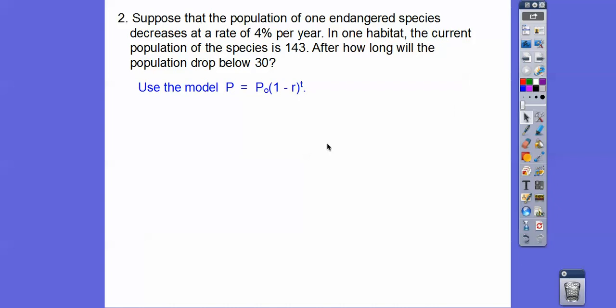That's going to be our final amount. Use the model P = P₀(1 - r)ᵗ. It's just like the investment equation. Here's our rate, 4%, and it's going to be minus because it's decreasing. We're solving for t. This is the 143, this is the 30.